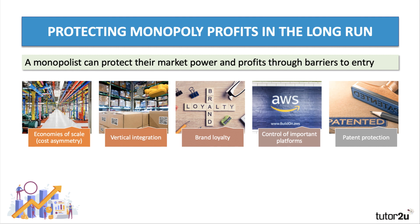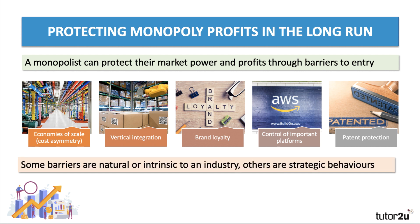Monopolies can protect their market power and their profits through barriers to entry. Some of these barriers are natural — intrinsic to an industry — others are strategic. Classic examples include economies of scale, where a big firm with market power is able to operate at a scale where unit cost is so much lower than a rival competitor could achieve. A monopoly may also have achieved vertical integration — control of the supply chain from farm to dining table.